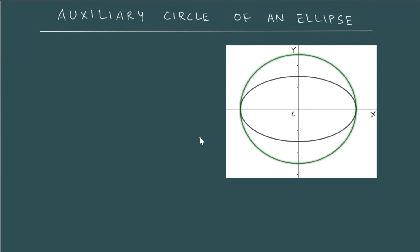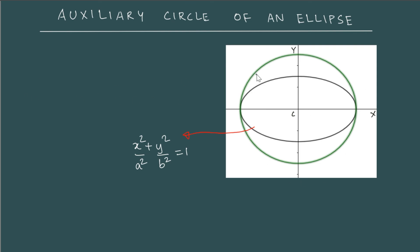Hello, in this lesson we will look at what an auxiliary circle of an ellipse is and we will also pay attention to one of the very important properties here. If I take the ellipse here, the equation of the ellipse is x² / a² + y² / b² = 1. And if you take the semi-major axis, then draw a circle with the semi-major axis as the radius, you get the circle around the ellipse. This circle is the auxiliary circle.